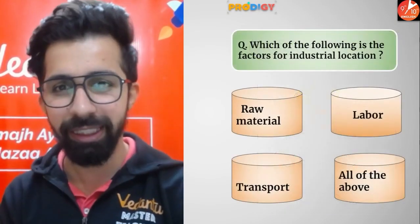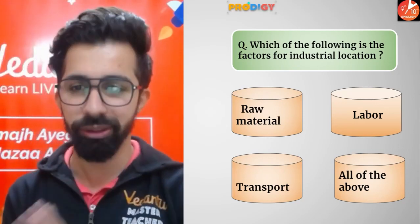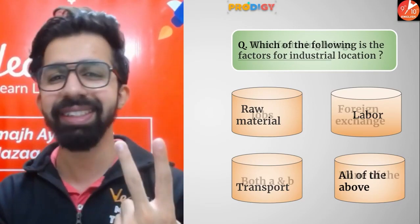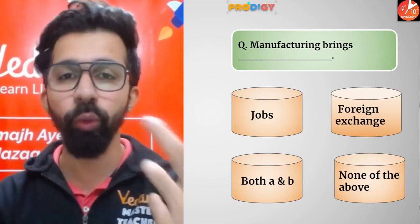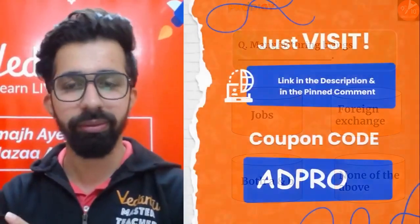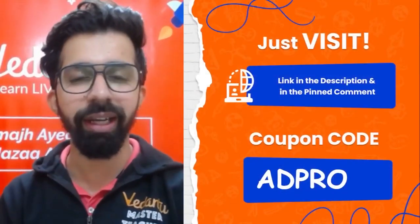That was all for today's session. I hope you understood each and every topic in detail. Now for homework: Question one — which of the following is a factor for industrial location? Is it raw material, labor, transport, or all of the above? Question two — manufacturing brings what? Jobs, foreign exchange, both A and B, or none of the above?